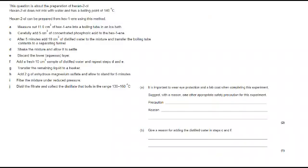So now let's go through and take a look at the answers. Question here about preparation of hexane-2-ol. It is not mixable with water. It's immiscible. Its boiling point is 140. And we've got a method here setting out how we are going to prepare hexane using this method. Taking hexane, boiling tube, in an ice bath, adding concentrated phosphoric acid. After 5 minutes, adding 10 cm3 of distilled water. Transfer that to a separating funnel. Shake the mixture. Allow it to settle. Discard the lower aqueous level. Add a fresh 10 cm3 sample of distilled water. Transfer any remaining liquid to a beaker. Add 2 grams of anhydrous magnesium sulfate and allow to stand for 5 minutes. Filter under reduced pressure. And distill the filtrate and collect the distillate that boils in the range 130 to 160. Now there's a lot of information there. And it's about picking out the relevant information that's going to help you to answer these questions.